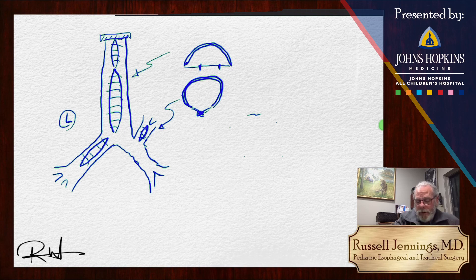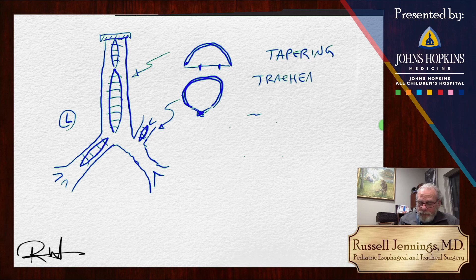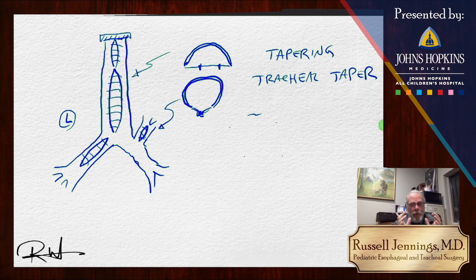So this strategy, which we're calling tapering, or the tracheal taper, allows us to reform those cartilages so they have circumferential support for the airway and limits the motion of the posterior membrane. I hope that you can see some of the worth in this.